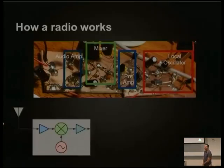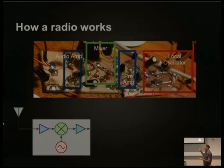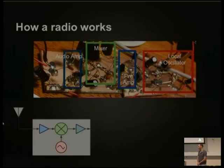Going back to the block diagram, I've highlighted the different parts of the radio: the local oscillator and the preamp providing the two signals fed into the mixer, then amplified by the audio amp. That's the radio I'm going to demonstrate in a few minutes.